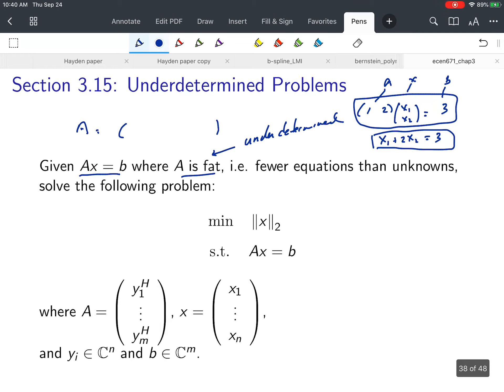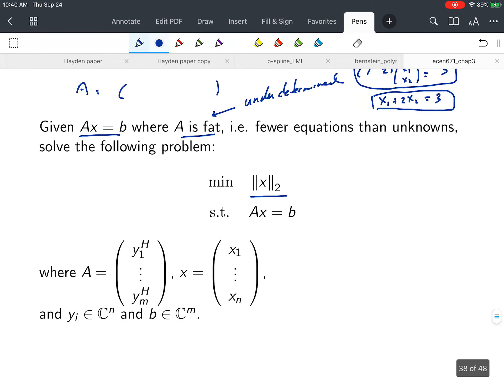One option is to choose the solution that has minimum norm in terms of the two-norm. This is called the min-norm solution of AX equals B for an underdetermined problem.